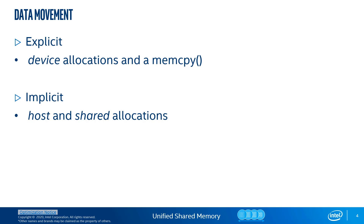Implicit data movement with USM is realized with host and shared allocations. In that case, there is no need to explicitly enqueue memcpy to move data between host and device. You can simply access pointers inside a kernel and the required data movement is done automatically. This greatly simplifies porting existing code to DPC++ – simply replace any malloc or new with the appropriate DPC++ USM allocation function and everything should just work.